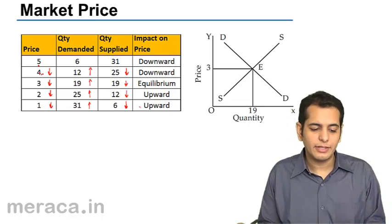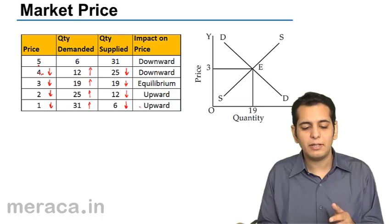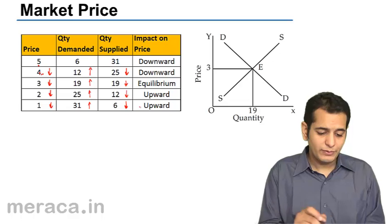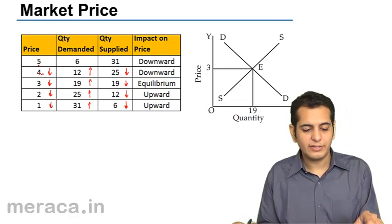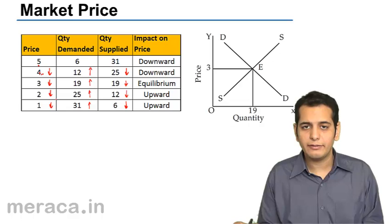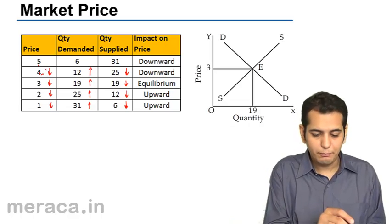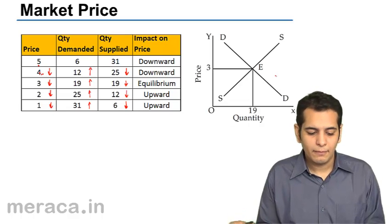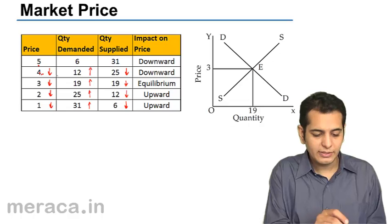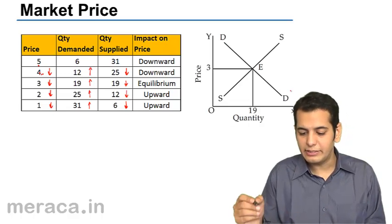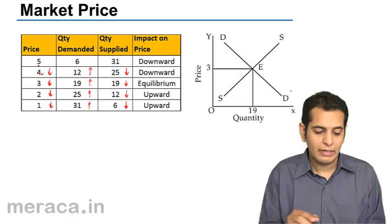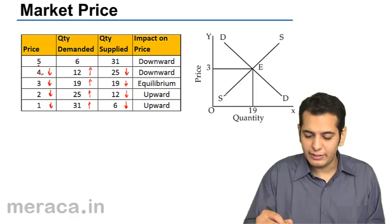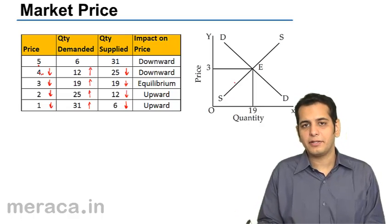Supply runs in the direction of price — that is, supply is directly related to price. Now, with the help of these two things — price and demand, and price and supply — we get the demand and supply curves. We plot these points on the graph. When we plot price and demand, we get the DD curve, the demand curve. And when we plot price and quantity supplied, we get the SS curve, the supply curve.